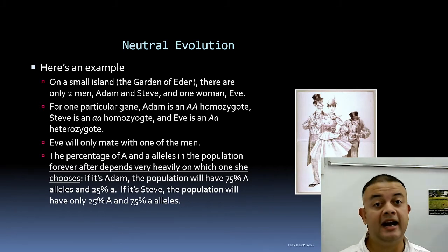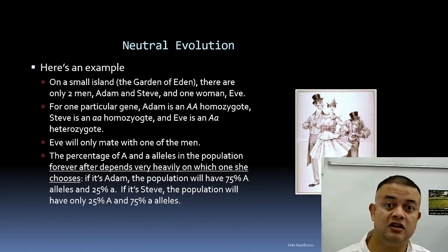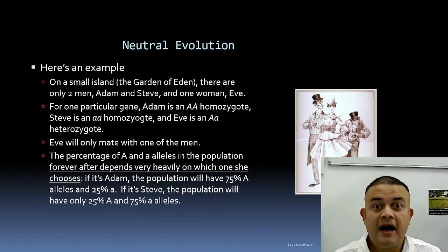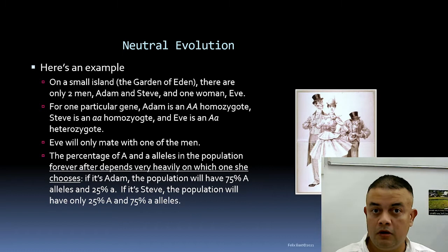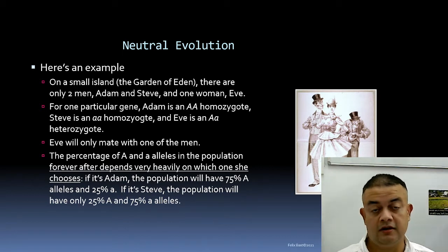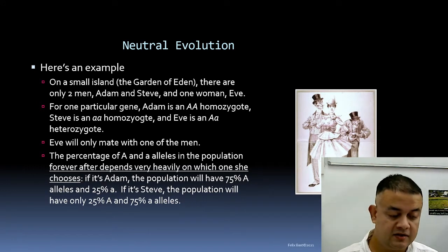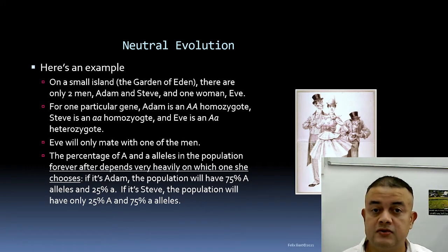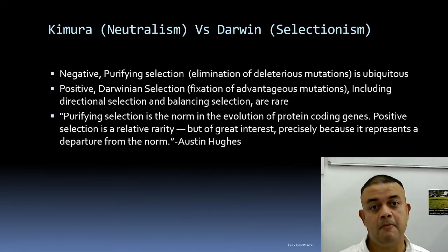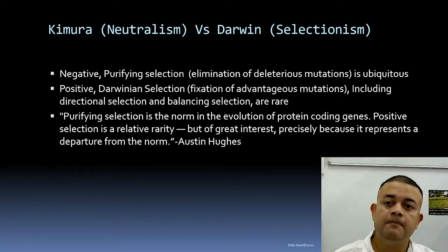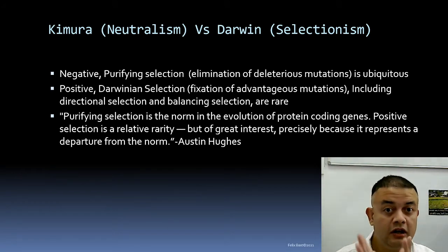Especially during population bottleneck situations, who survives is purely a matter of luck — you just happened to be on an island when a nuclear holocaust happened, or swimming in the sea when a forest fire broke out. You were just lucky to survive. All these things can happen by sheer chance.